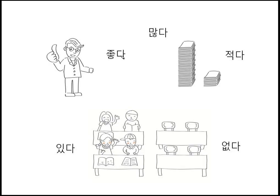좋다 means good. 많다 means there is/are much or many. 적다 means there are a few. 많다 and 적다 are opposite expressions. 있다 means there is or there are. 없다 means there isn't or there aren't. Their 요-forms are: 좋아요, 많아요, 적어요, 있어요, 없어요.